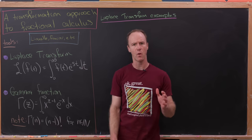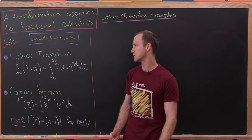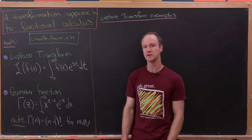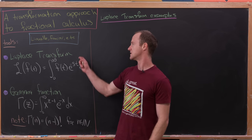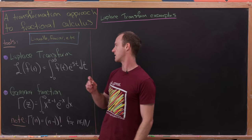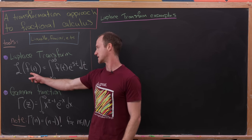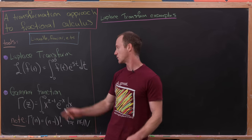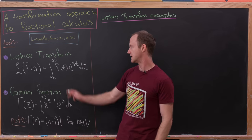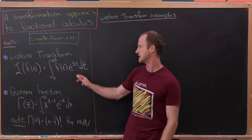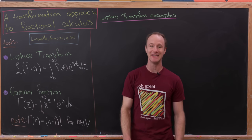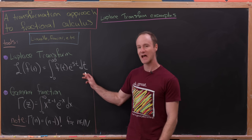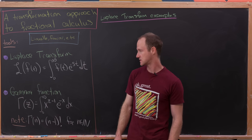This approach is going to require some tools. The first is the Laplace transform. You could also use the Fourier transform. The Laplace transform of a function f of t is equal to the integral from 0 to infinity of f of t times e to the minus st dt. This outputs a function of s.